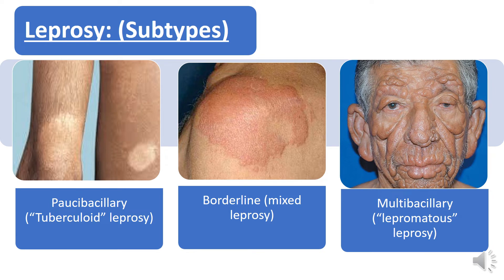Moving on to the subtypes: there are three main types of leprosy. Number one is Pauci-bacillary, which we call tuberculoid leprosy; borderline or mixed leprosy; and Multi-bacillary, that is lepromatous leprosy.